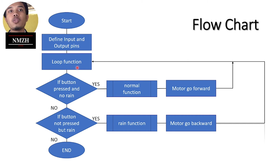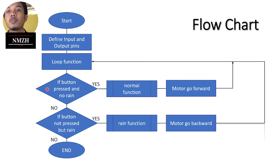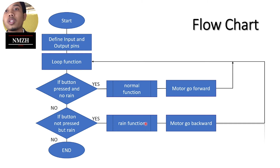Then we go back to the loop. If there is no button press but there is rain, it goes to the rain function. The rain function tells the motor to go backward to pull the clothes inside the house.